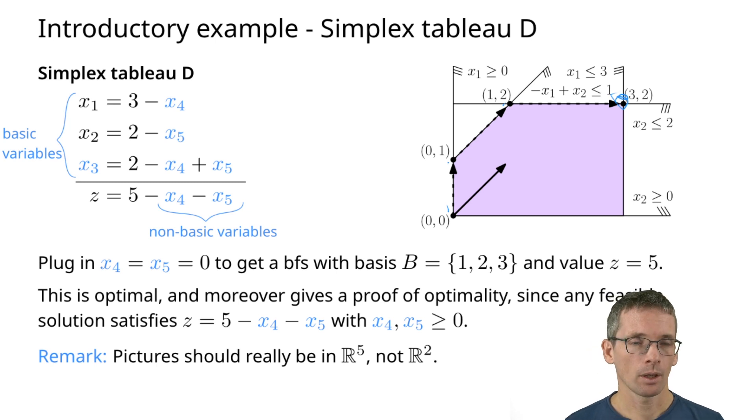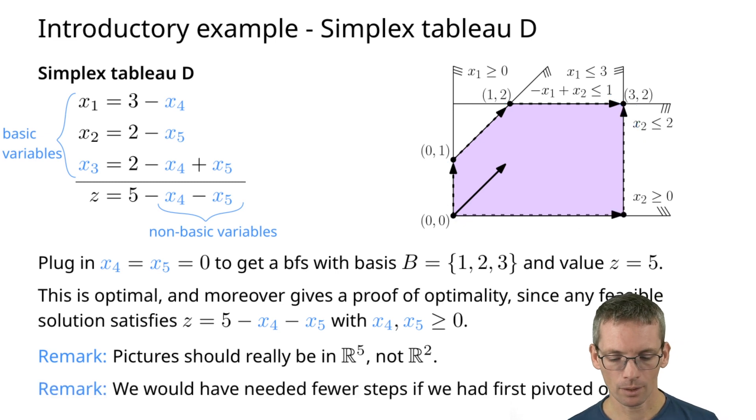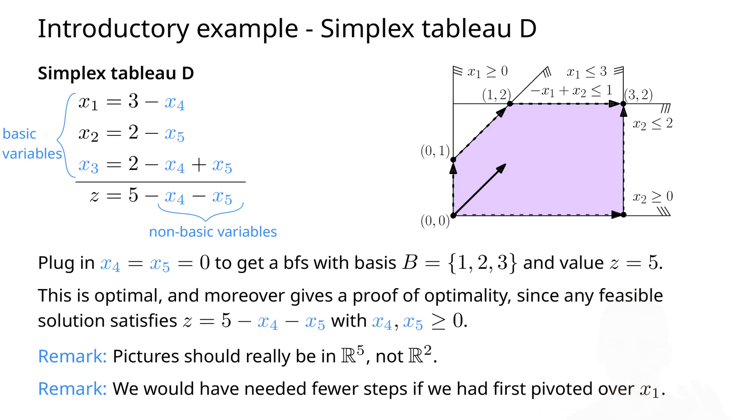Now of course, if looking at this figure you also see it would have been a better idea to go along this side. What does that mean? It means that we would have had fewer steps if we would have first pivoted over x1. At the beginning, if you remember, we had a choice. We could take x2 and swap it in or x1. We decided to swap in x2. If we would have swapped in x1, it would have been better in terms of number of steps.